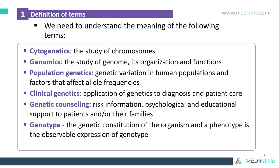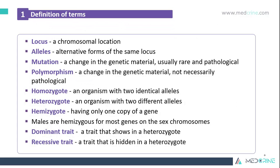Genetic counseling involves risk information, psychological, and educational support to patients and their families. A genotype is the genetic constitution of an organism, and a phenotype is the observable expression of this genotype. A locus is a chromosomal location, and an allele is an alternative form of the same locus.